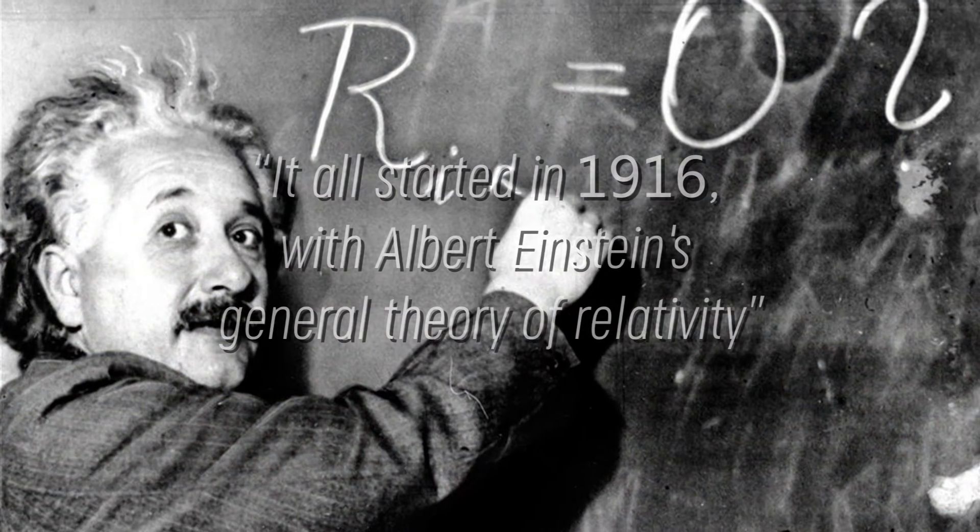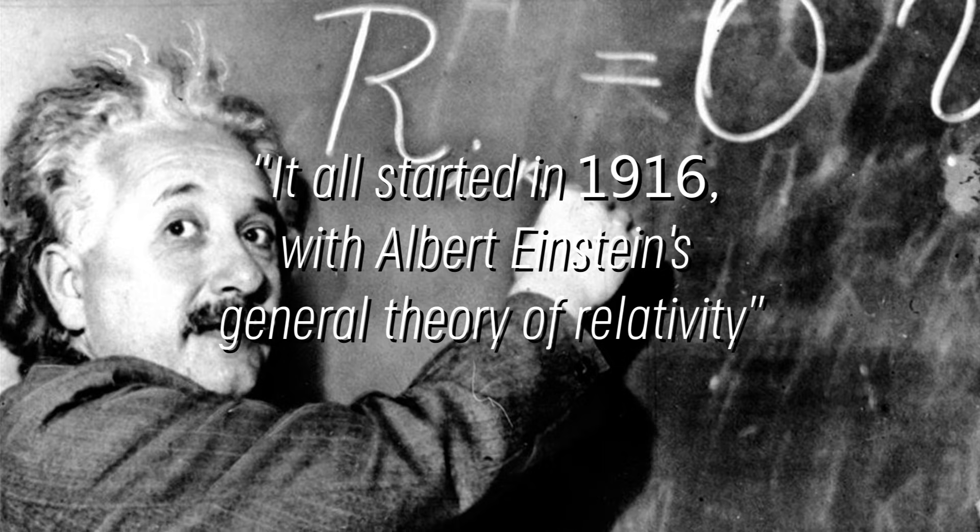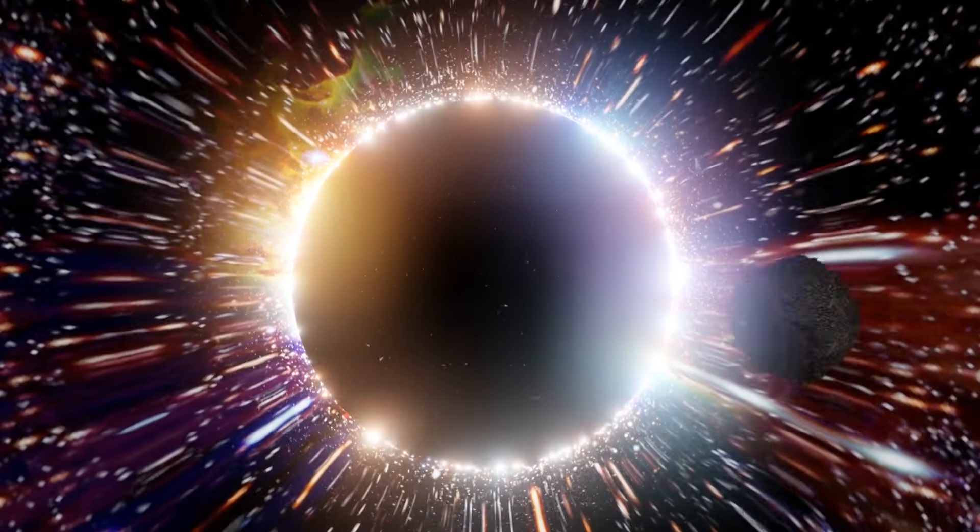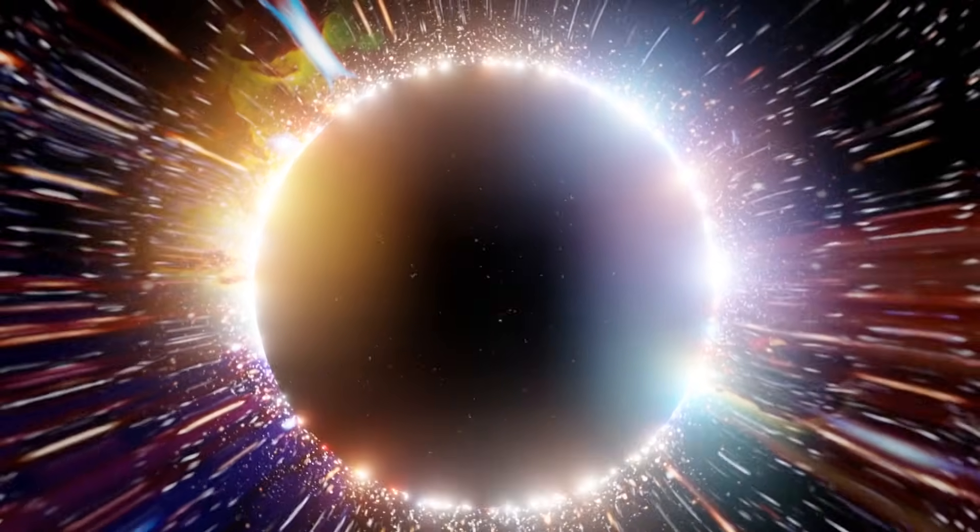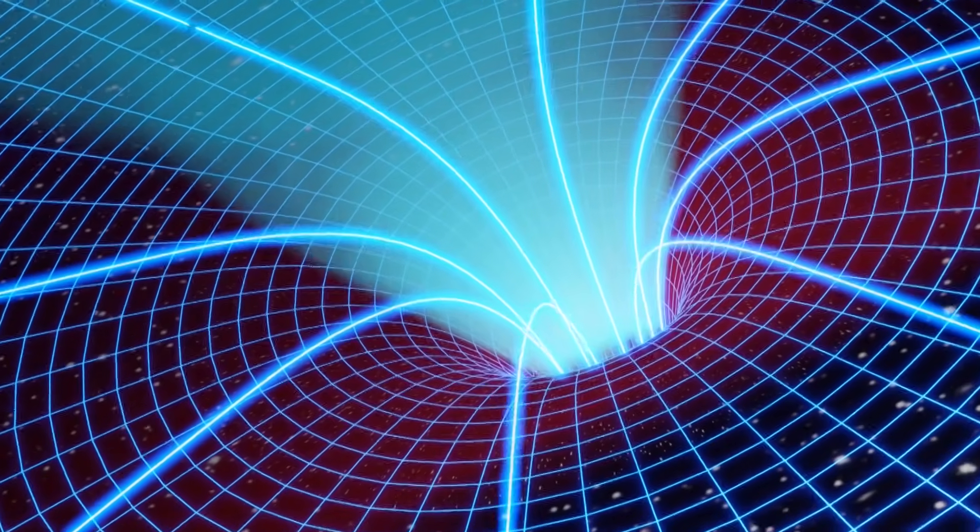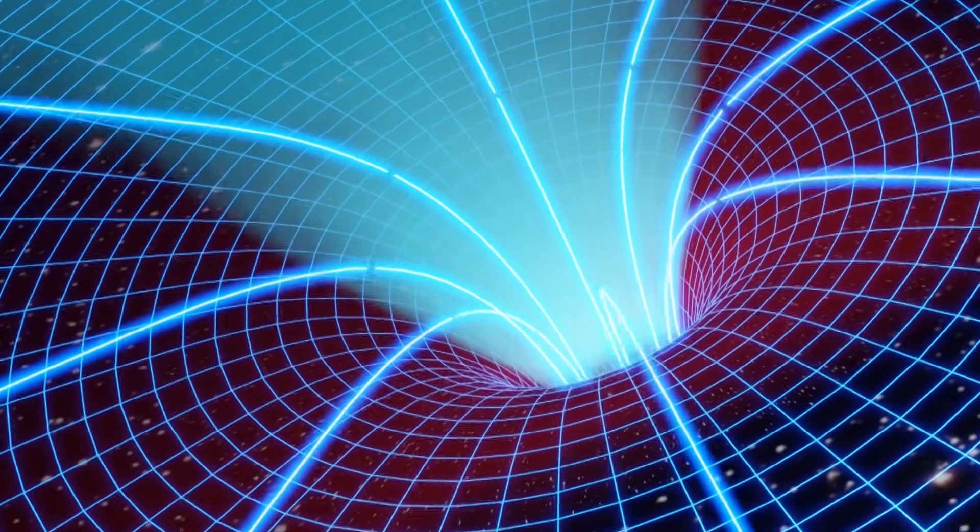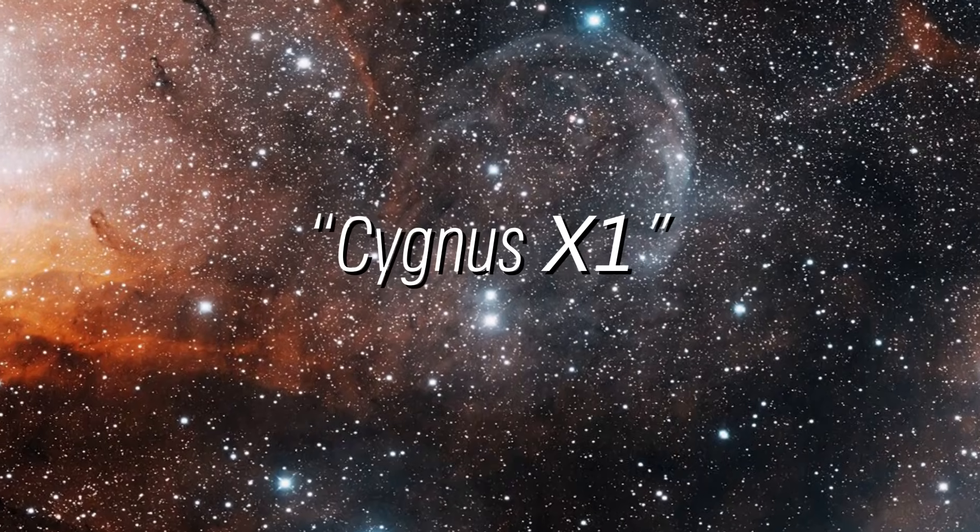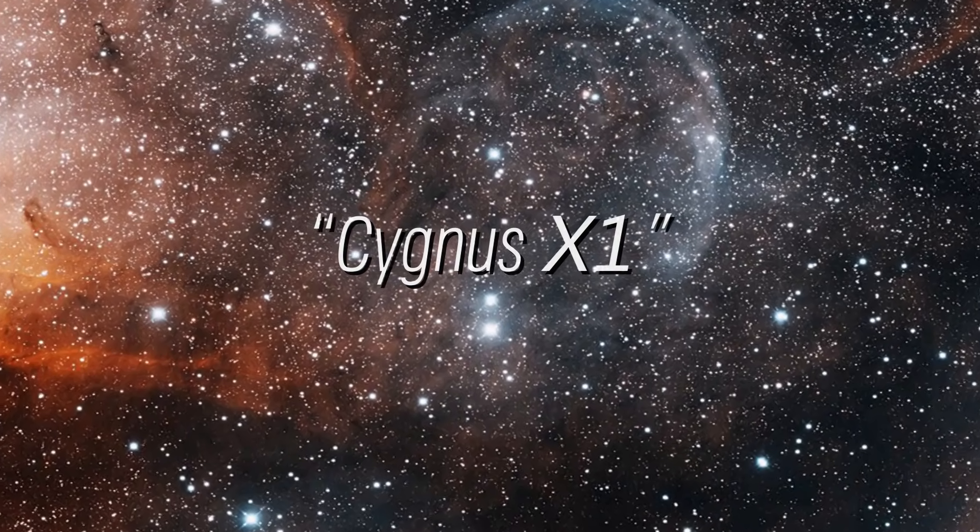It all started in 1916 with Albert Einstein's general theory of relativity, who was the first to predict the existence of these entities. Although the term black hole was officially coined 50 years later, some scientists already believed in Einstein's theory, while others dismissed it. It was in the late 1960s, when researchers were studying the constellation Cygnus X1, that they noticed something amazing.